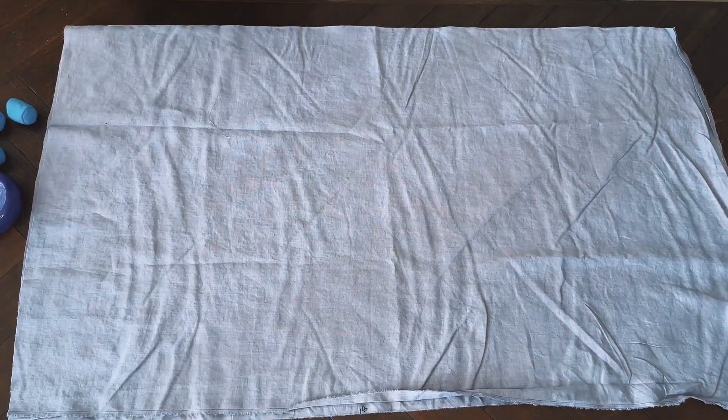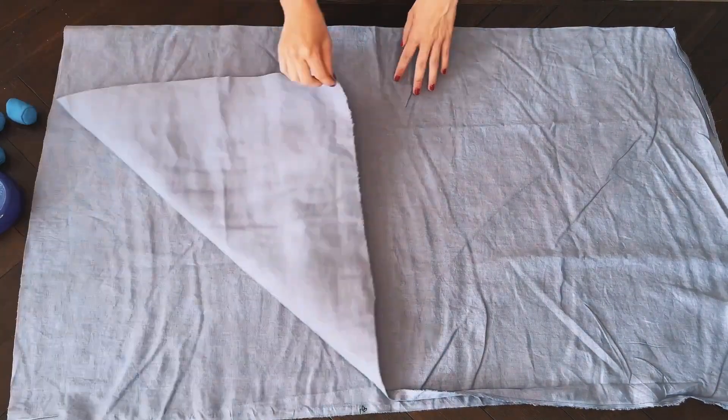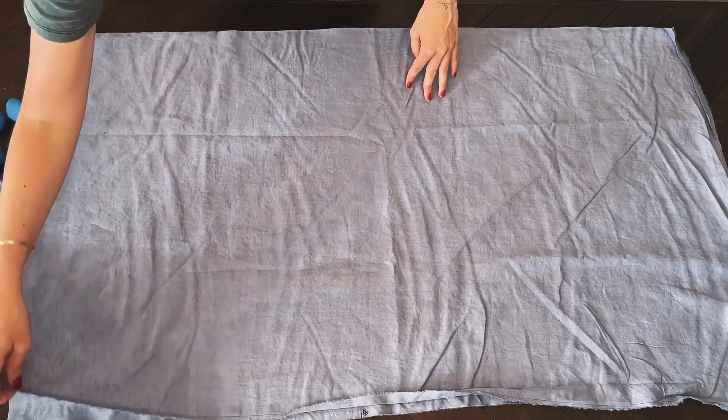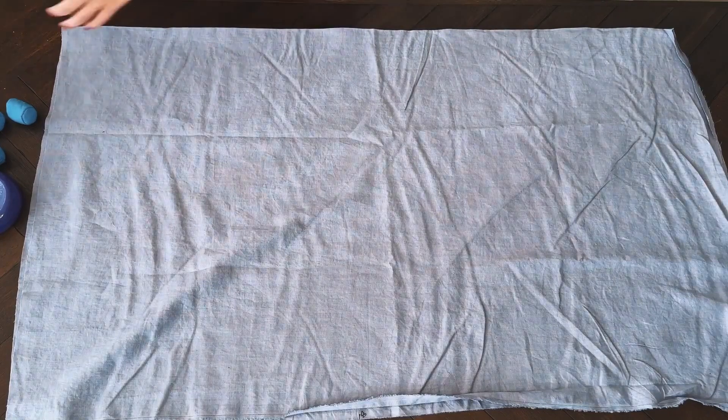Before cutting the fabric, you need to fold it in half lengthwise so that the two selvage edges meet. The right sides of the fabric should be together. If you're not sure how to do this, be sure to check out course 1 for more information.